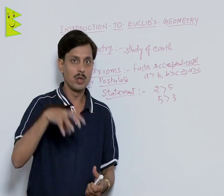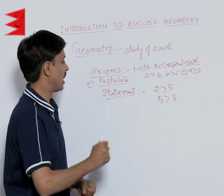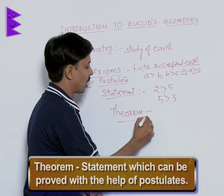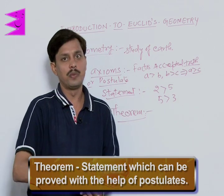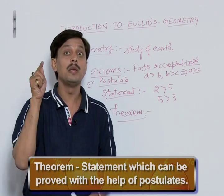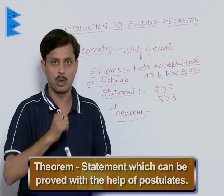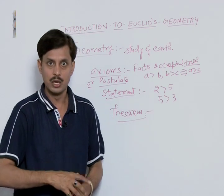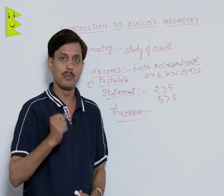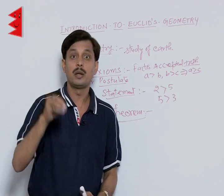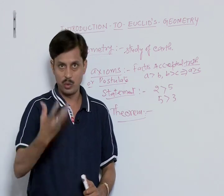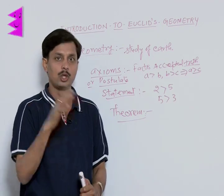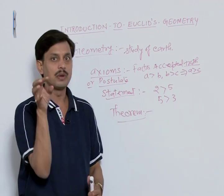Now we come to the word we often use in geometry — what is a theorem? A theorem is a kind of statement which can be proved with the help of some postulates, axioms, or some results proved previous to it. So whenever we prove a theorem, in that proof we use postulates or axioms, or the theorem involves some previously established results.